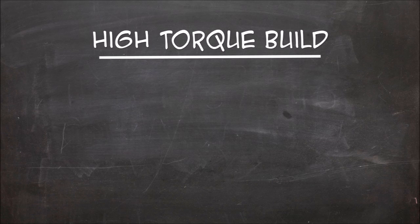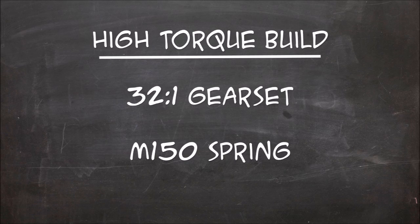If you want a high FPS with no consideration for RPS for this APS gun, you change the gear set to 32 to 1 and use an M150 spring for roughly 450 FPS. This build is high stress.